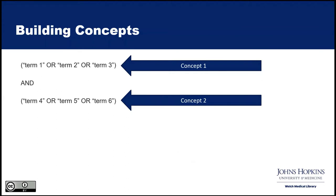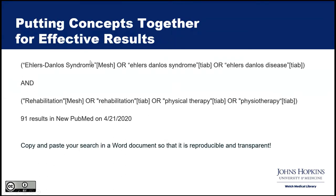This is what's called a search string — a multi-concept search to find the latest and greatest literature. Filling in a template for our example, Ehlers-Danlos syndrome terms combined with rehabilitation terms in title/abstract fields returned 91 results in New PubMed as of two days ago. It's important to document your search strategy because publishers often require it, and it saves time when you need to return to your work.